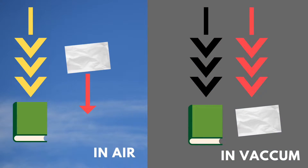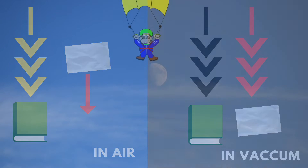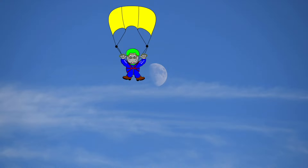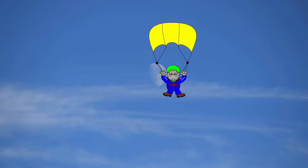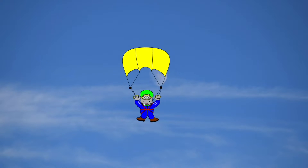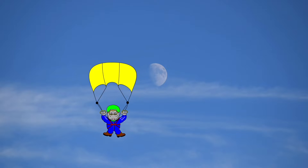So this is happening because of air. But what will happen if there is no air? If we are in a vacuum, then the paper and the book will fall at the same time. Ever wondered how parachutes work and allow us to have a safe landing? That's because of air resistance.